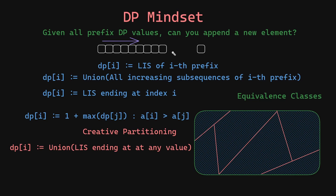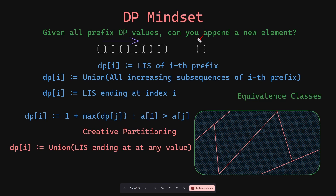What if we go all in — a brute force approach — where for this particular prefix we store all the subsequences that are possible? The number of such subsequences is equal to 2 to the power i. So let us store all the subsequences for this prefix in a set. When you append a new element, you can go through the entire set, check the last element of each subsequence, and if it is less than or equal to this element, expand it to get a better subsequence. This approach will definitely work, but the time complexity would be 2 to the power n times n.